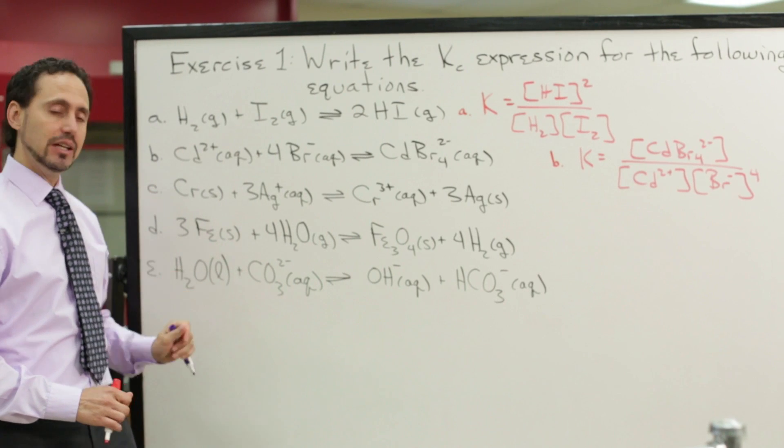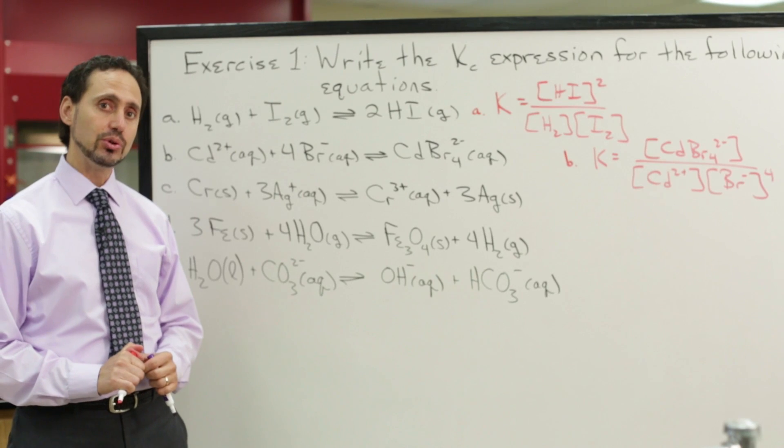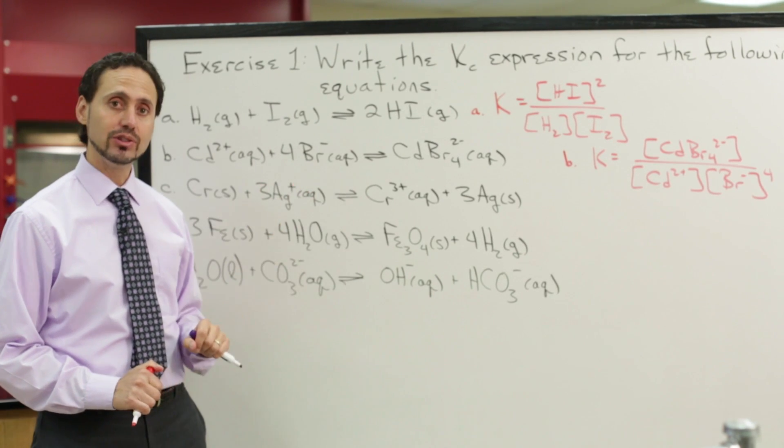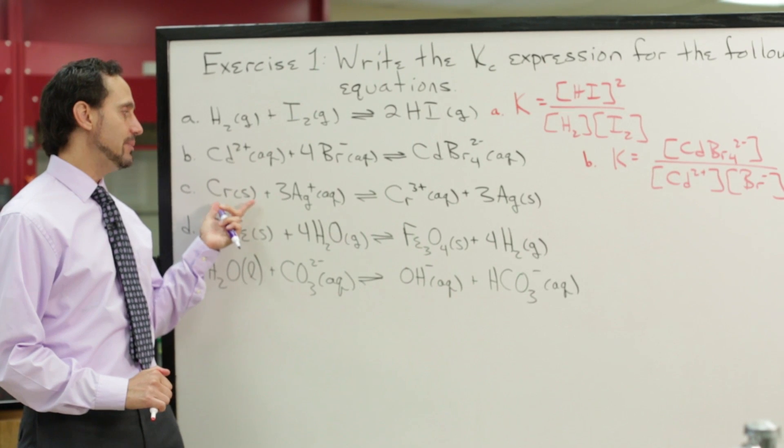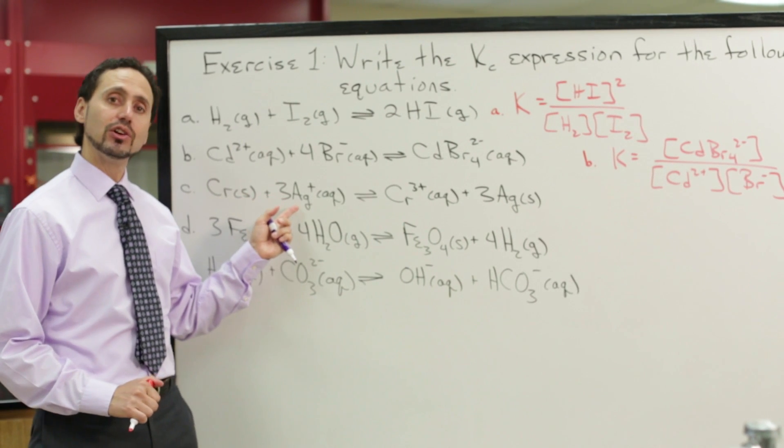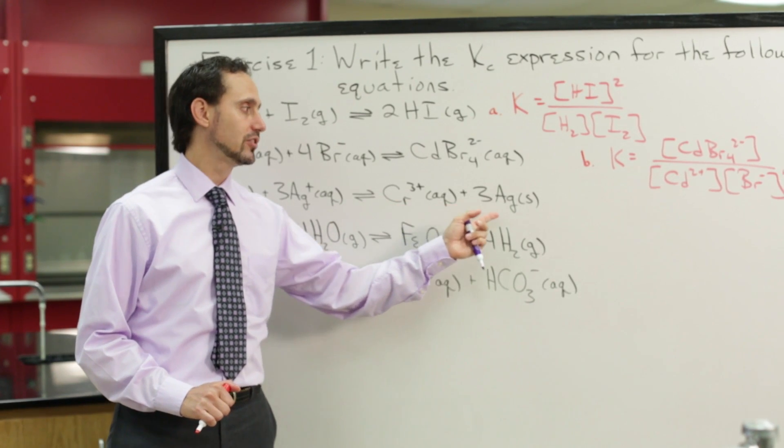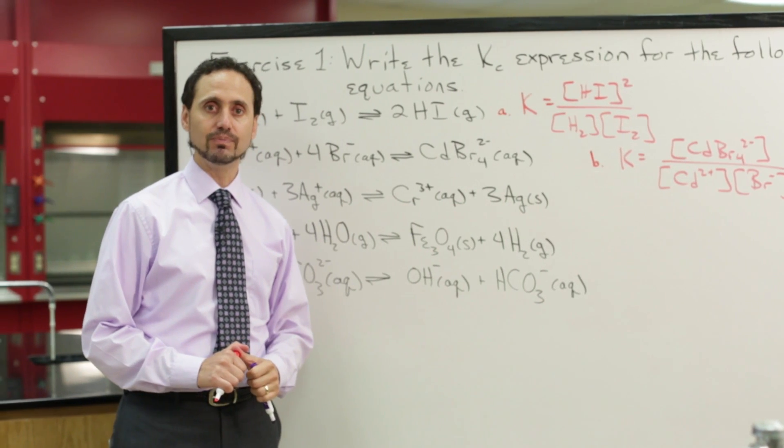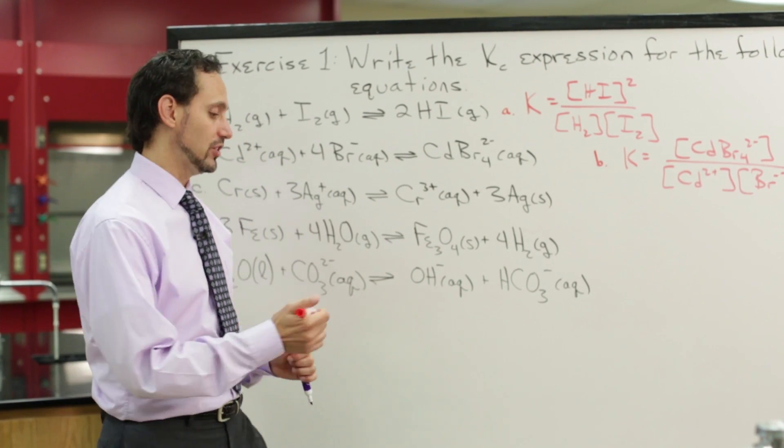Questions C, D, and E may be a little more challenging, but hopefully you've already answered them. I'll walk you through how to write those out to see if you got the right answer. For question C, we have chromium solid reacting with three moles of silver ions to produce chromium three plus ions and three moles of solid silver. So what would be the equilibrium constant expression for letter C?